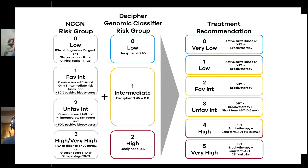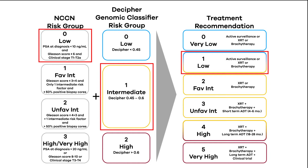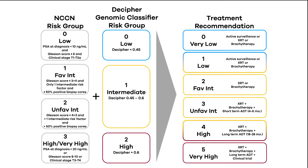Likewise, patients who have low-risk disease and an intermediate risk Decipher score, we would give them monotherapy — either radiation alone or brachytherapy. But again, many of those are also candidates for active surveillance.